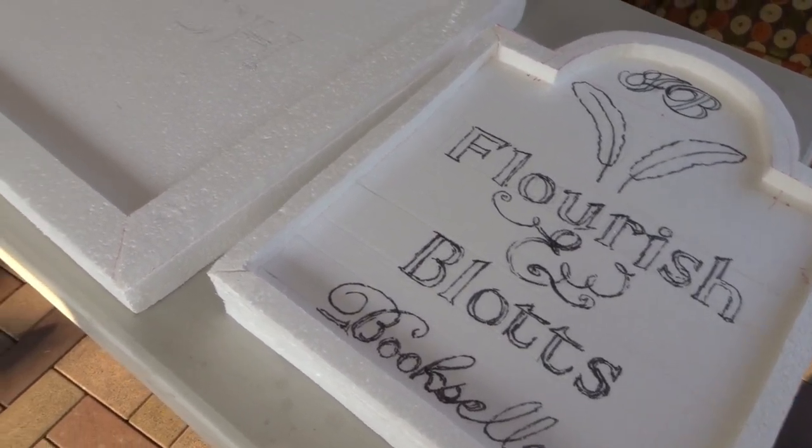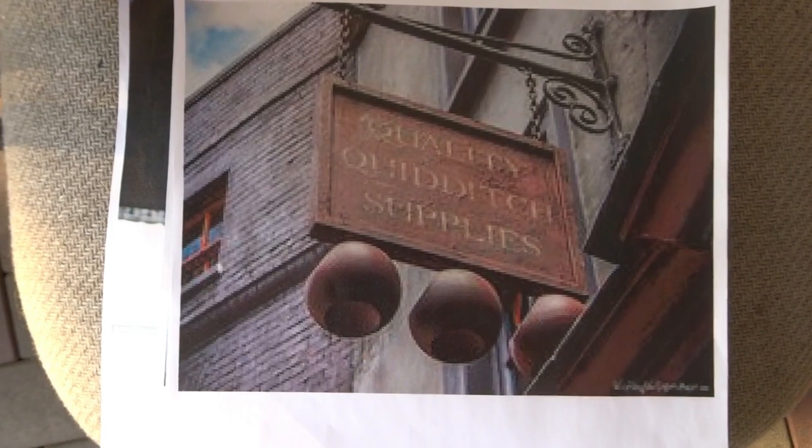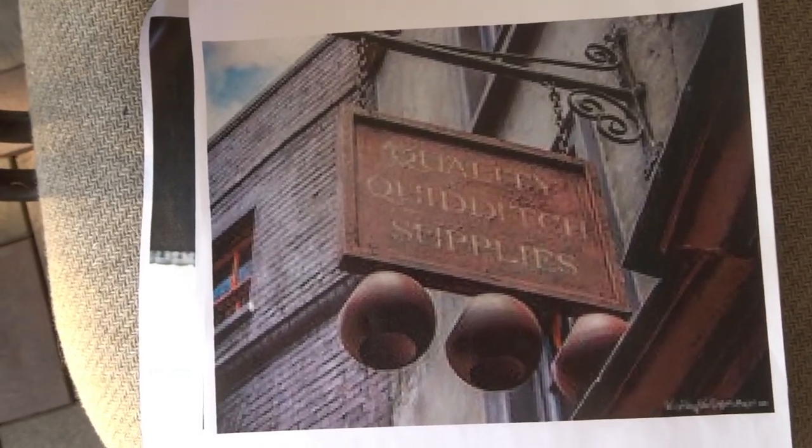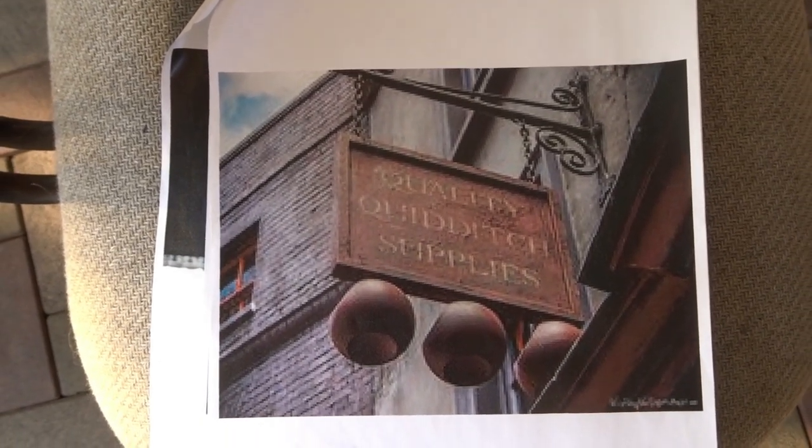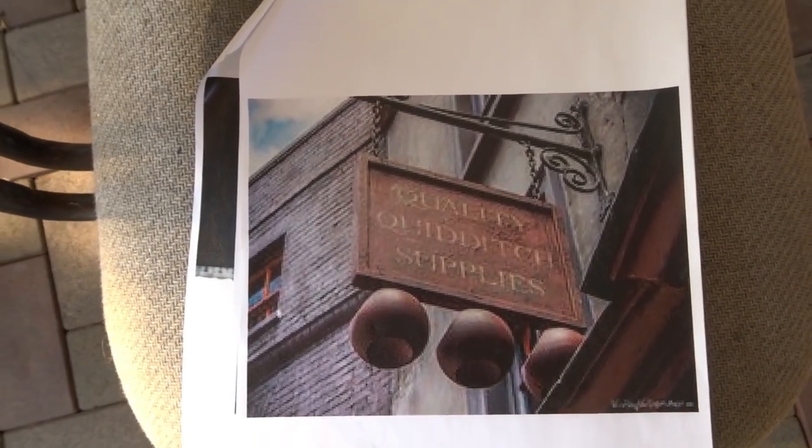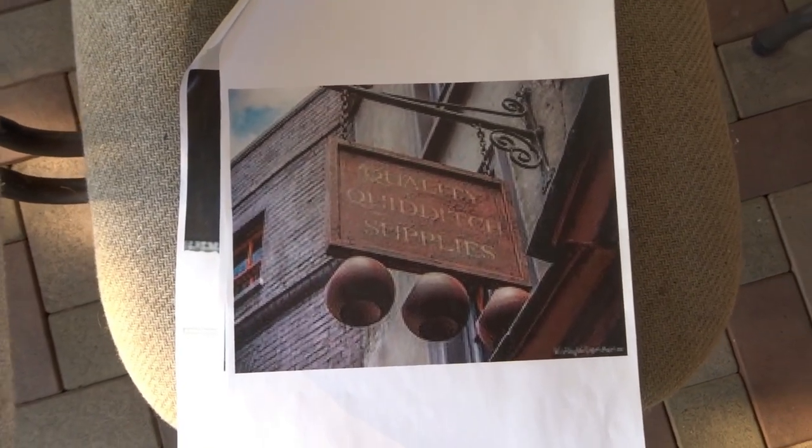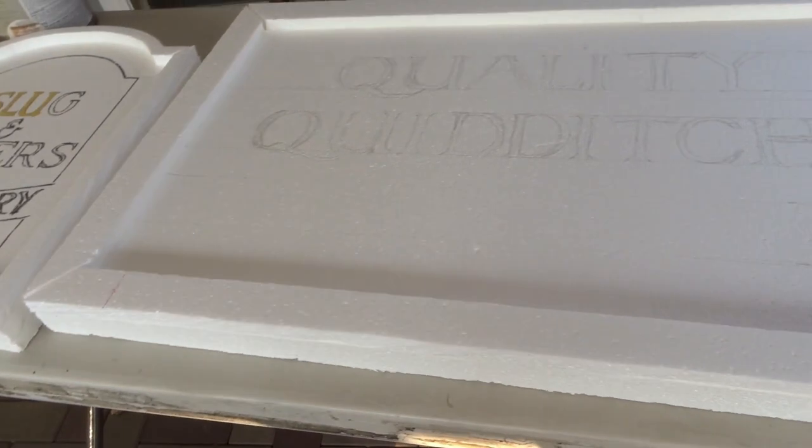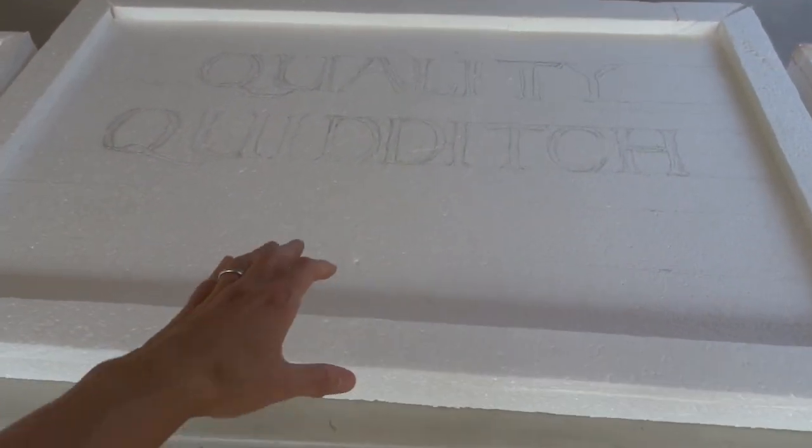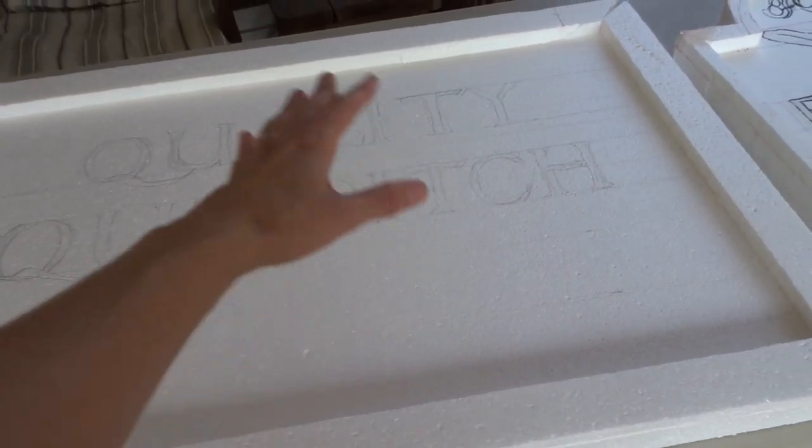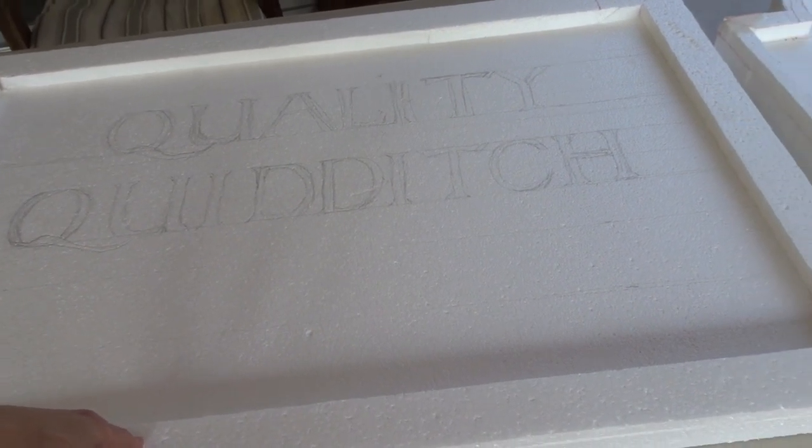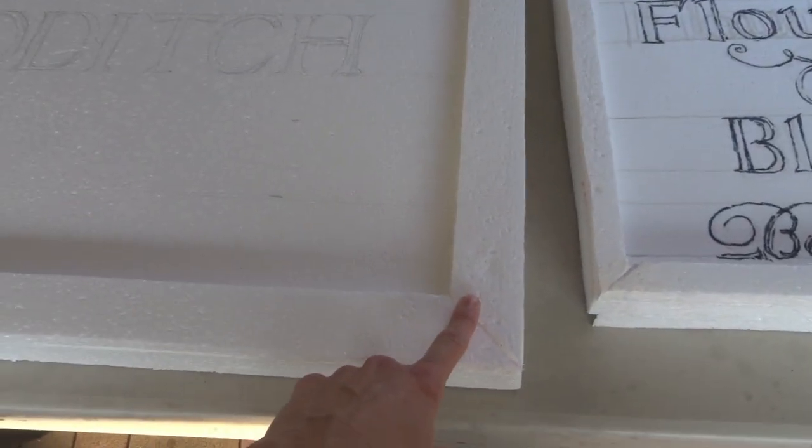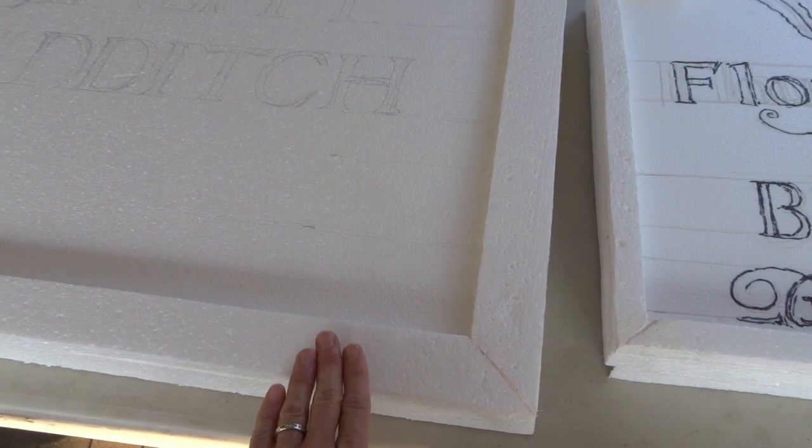So I can show you the various stages of my process. Going off some of these pictures on the internet, this one happens to be Quality Quidditch Supplies, which is a really bad printout, real pixelated of this photograph, but it's better than nothing. Judging by the size, I did my best guess of how big these signs are. The first step is I cut a piece of foam roughly the size of what I think the sign is. Then I went ahead and I went to another piece of foam and I cut the frame part and glued that on.